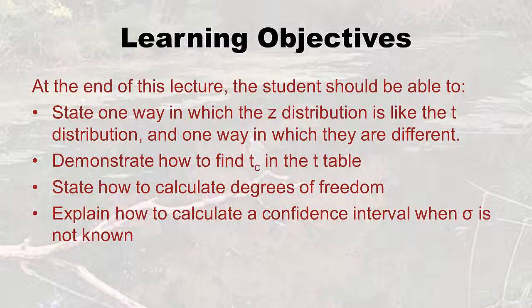At the end of this lecture, you should be able to state one way in which the z distribution is like the t distribution, and one way in which they are different. You should also be able to demonstrate how to find t sub c in the t table, state how to calculate degrees of freedom, and explain how to calculate a confidence interval when the population standard deviation is not known.